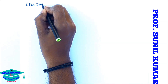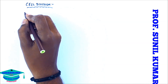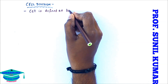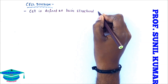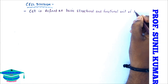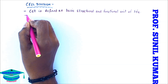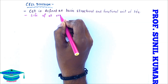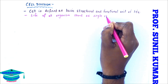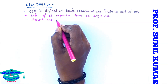Today we are going to talk about one of the most important topics, that is cell division. Let's first understand what we mean by the word cell. Cell is basically defined as the basic structural and functional unit of life. It means if there is life, it is purely because of the cell. The life of all organisms on this earth started from a single cell — the zygote — which resulted in the formation of the entire organism.